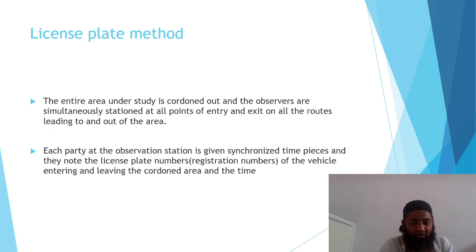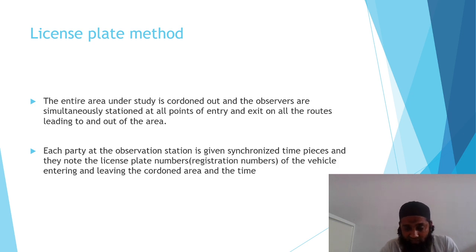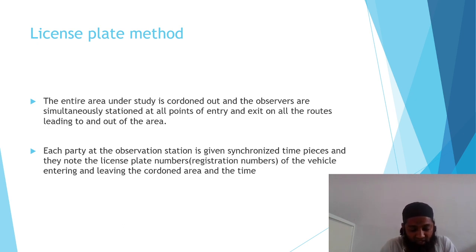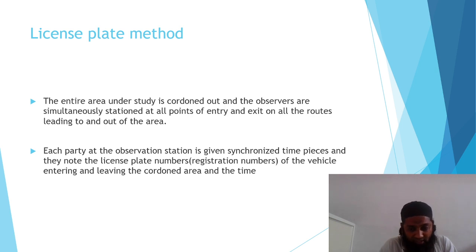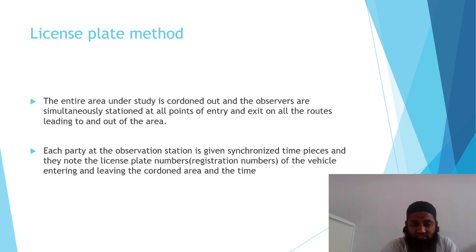In the license plate method, the entire area under study is cordoned off and observers are simultaneously stationed at all points of entry and exit on all routes leading to and out of the area. Each party at the observation station is given synchronized timepieces and they note the license plate numbers of vehicles entering and leaving the cordoned area, along with the time. So we can note when a specific vehicle enters the area and when it leaves — this is the license plate method.